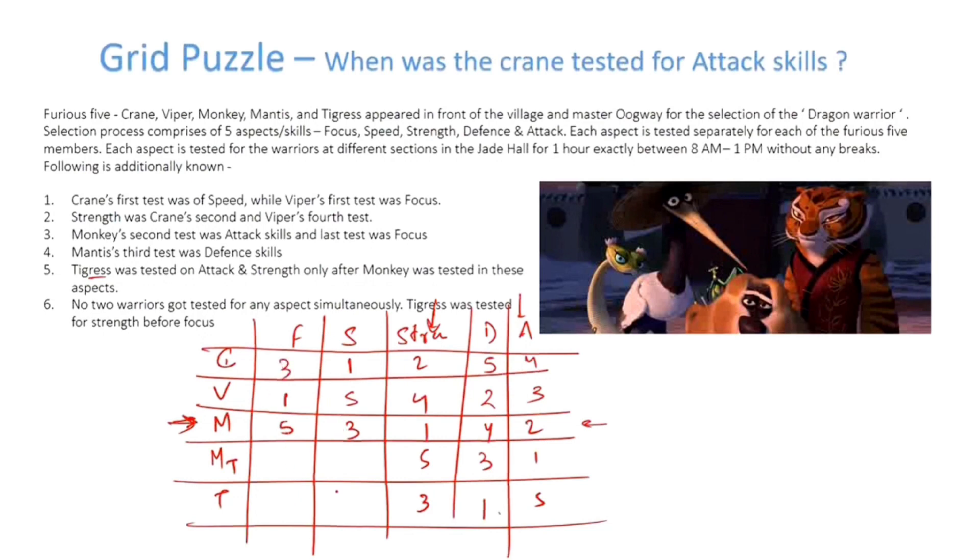Now we have 3, 1, 5 and 3, 1, 5. We know that Tigress was tested for Strength before Focus. So now what is remaining here? Here 2 and 4 are missing. Here also 2 and 4 are missing. We know that Tigress was tested for Strength before Focus, so Strength must be 2, Focus must be 4. This must be 2, this must be 4.